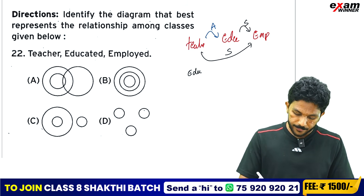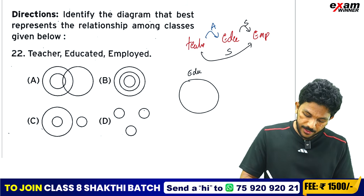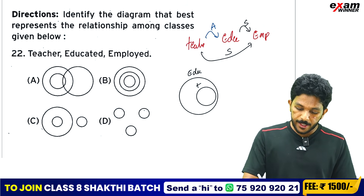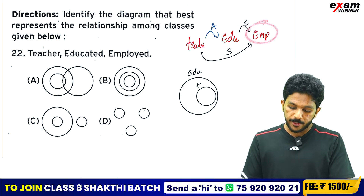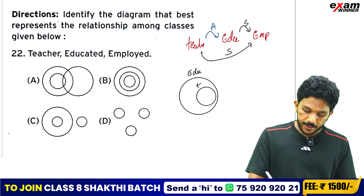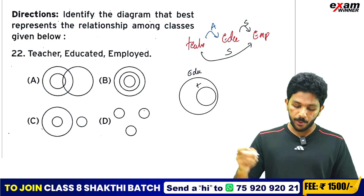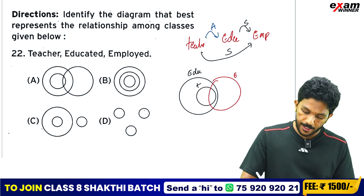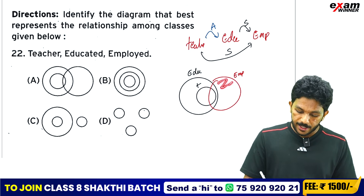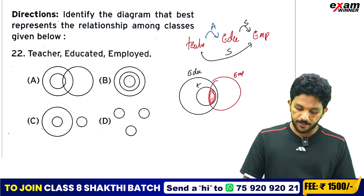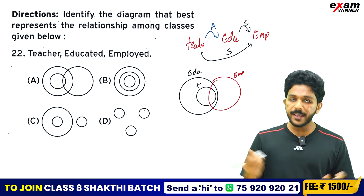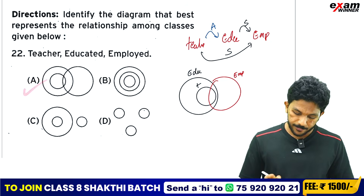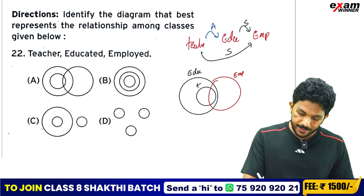The teacher circle is inside educated. Employment is overlapping. Some educated are employed. Teachers are a subset. The correct answer is option A — showing the correct relationship between Teacher, Educated, and Employed.